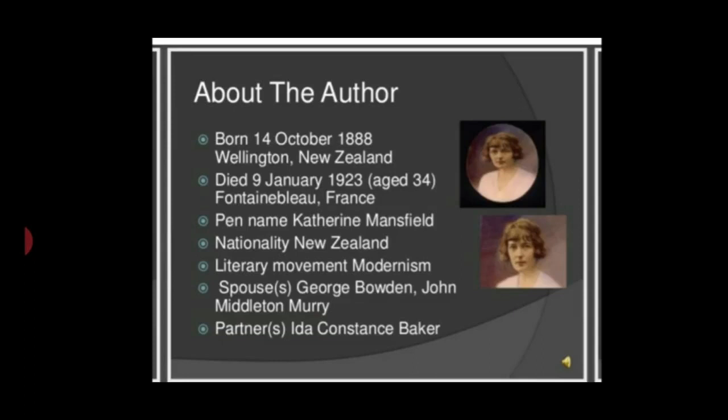Her literary movement was Modernism. What do you mean by Modernism? It is an art related to the past and the co-current. Her spouses were George Bowden and John Middleton Murry, and her partner was Ida Constance Baker. This was a short description about the author.